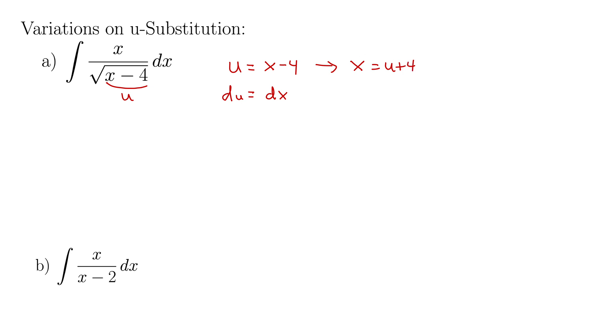And then look what happens to our integral. This becomes the integral of u plus 4 over square root of u du. And now we have something we can work with. As long as there's a single variable down here in the denominator, we're okay. The problem is when we had a variable minus some constant that we had troubles. But now look, we can split this integral up, the integral of u over rad u plus the integral of 4 over rad u, du on both of these.